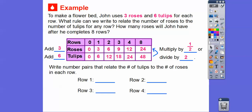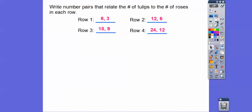Write number pairs relating tulips to roses. In row one: six comma three. Row two: 12 comma six. Row three: 18 comma nine. Row four: 24 comma 12. You can see the number of tulips is twice the number of roses in each pair. So the rule is: the number of tulips in each row is two times the number of roses.